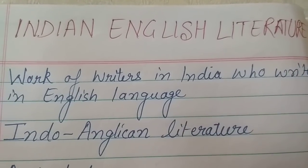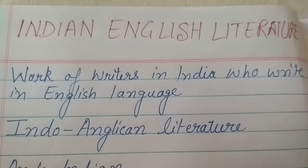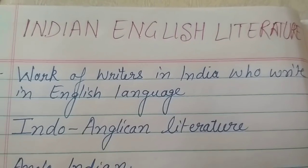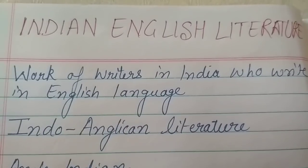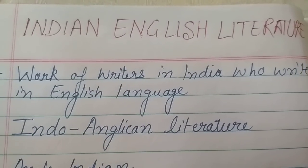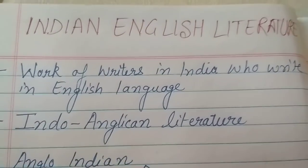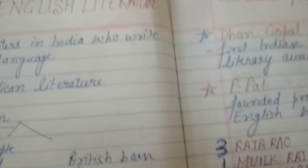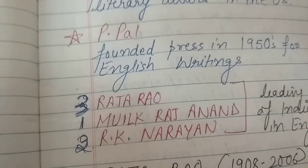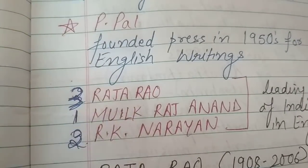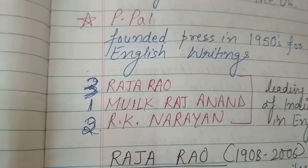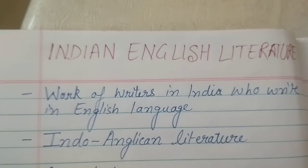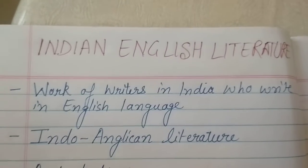Hello friends, welcome to my YouTube channel. Today's topic is Indian English Literature. In this video, we will discuss about the three main pillars of Indian English Literature — three leading authors and pioneers: Mulk Raj Anand, R.K. Narayan, and Raja Rao. But before going to these authors, let's discuss what Indian English Literature is and its brief history.